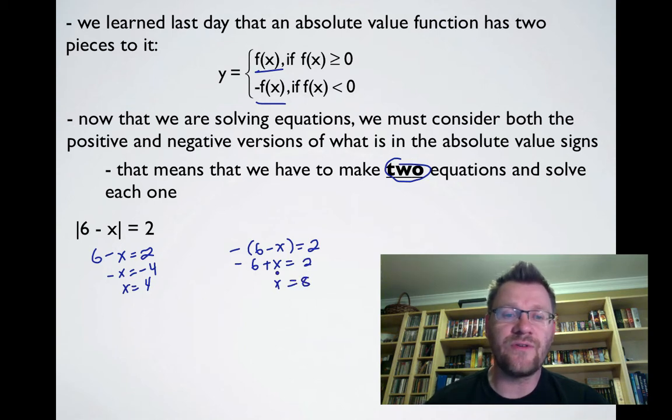We can check both answers. If we plug 4 in, we get |6 - 4| = 2. If we plug 8 in, we get |6 - 8| = |-2| = 2. Both check out.